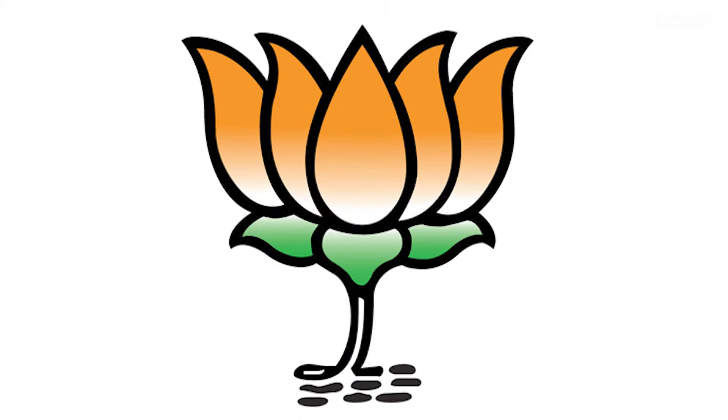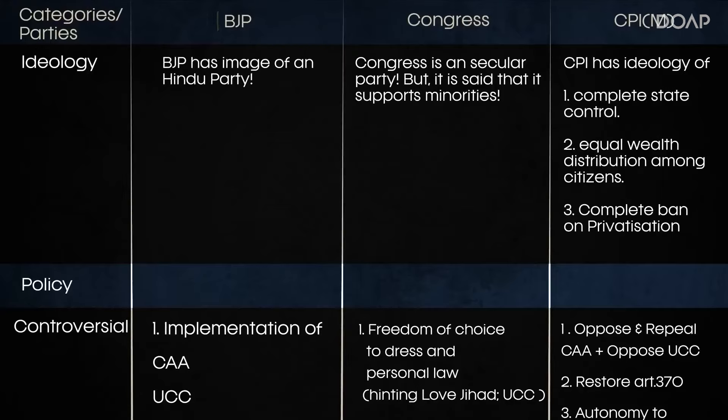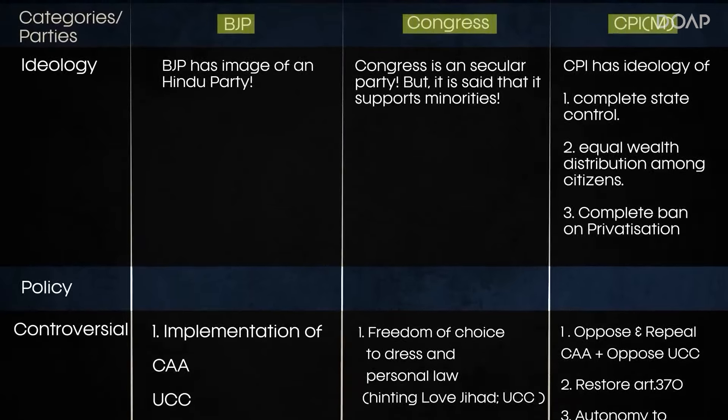This video aims to highlight the manifestos of the major political parties and their vision. At the moment, there are four major political parties in India: BJP, Congress, CPIM, and AAP. Strangely, AAP hasn't released their manifesto yet, so we'll be focusing on the top three. To compare these manifestos, I've highlighted six pillars of development that we'll focus on.